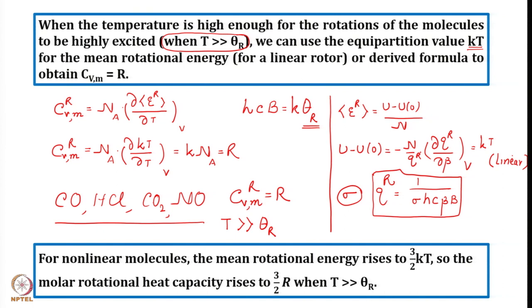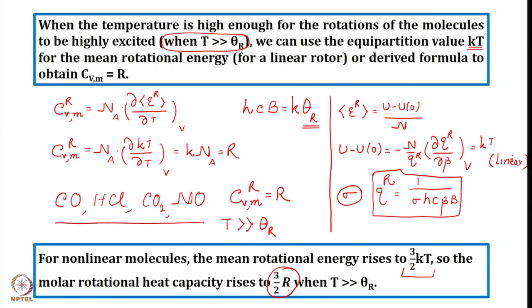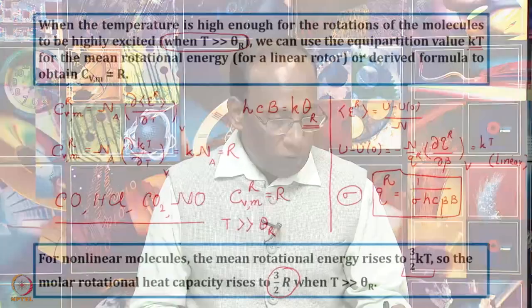For a non-linear rotor, you can do a similar exercise. If the temperature is very, very high, you can use the equipartition value and show that the constant volume heat capacity for a non-linear rotor equals 3/2 R, because the mean rotational energy is 3/2 kT. So whenever discussing rotational contribution, you must distinguish between linear rotor — C_Vm = R — and non-linear rotor — C_Vm = 3/2 R — provided T >> θ_R.